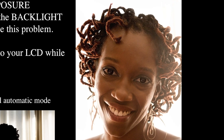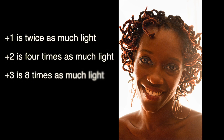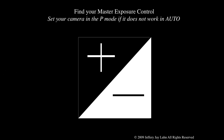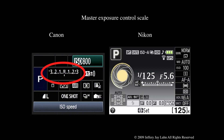Plus three is a big exposure difference. Plus one is twice as much light, plus two is four times as much light, and plus three is eight times as much light — but that's what we needed to make this photograph work. On your camera, look for the master exposure control — it looks like a plus and a minus. On the left is what the Canon exposure scale looks like, and on the right is what the Nikon exposure scale looks like. The zero position, the center position, is no adjustment at all. When you move your control wheel in one direction or another, the exposure will brighten or darken depending on which way you move it.